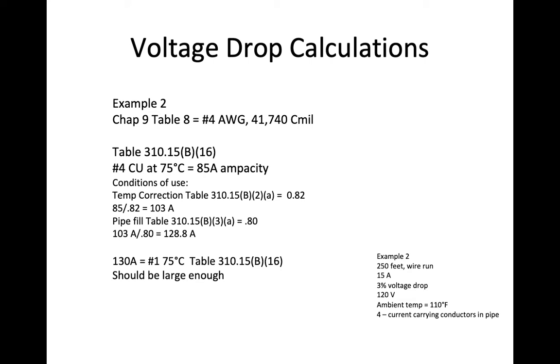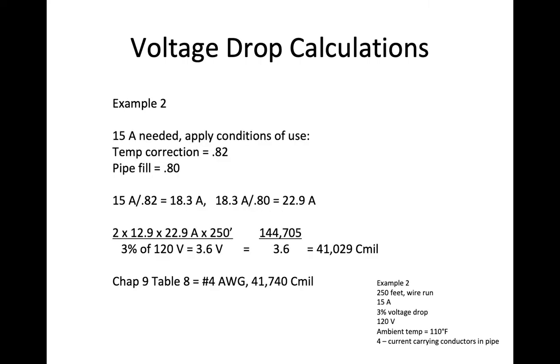So I go back to table 310-15B-16, run my finger down the 75 degree column, and I find that I need a number 1 conductor to get 15 amps, 250 feet away, through 110 degree ambient air temperature, and 4 current carrying conductors in a pipe. And that's how you do it.